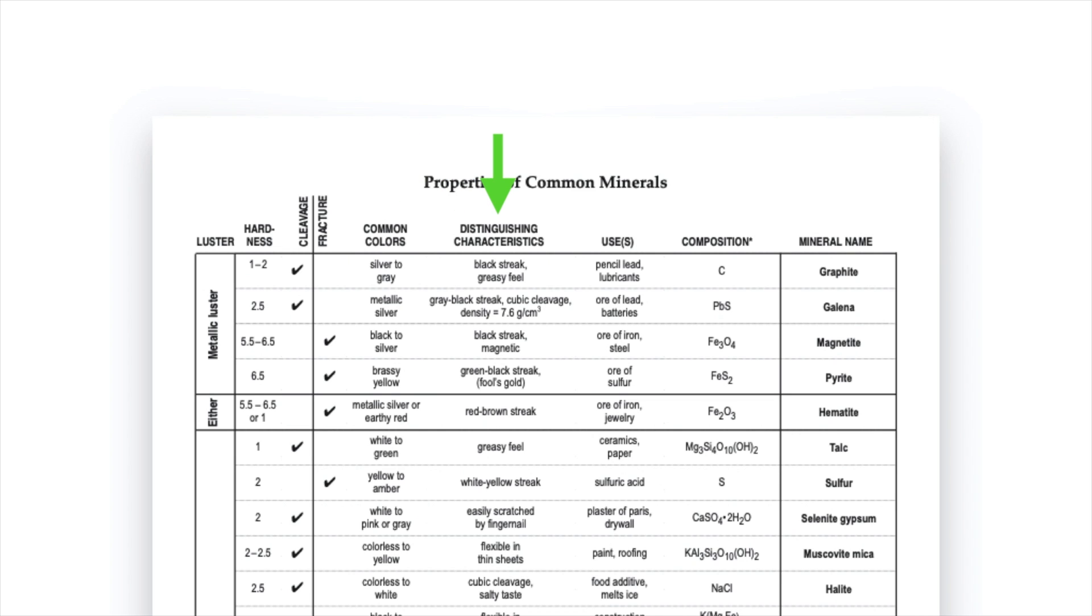Moving along, distinguishing characteristics. So this is where you'll find all sorts of other interesting information that sets a particular mineral apart from the others. Here's where you'll find information about streak which is the color of the mineral as a powder. So you can see graphite has a black streak, hematite has a red brown streak. You'll also see other interesting things like galena has a very high density, magnetite is magnetic, selenite gypsum can be scratched by your fingernail. One of the more interesting ones halite has a salty taste.